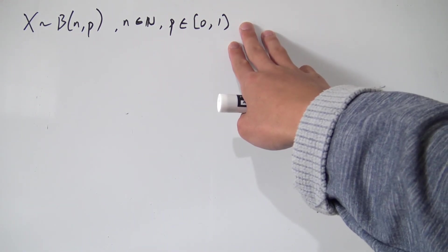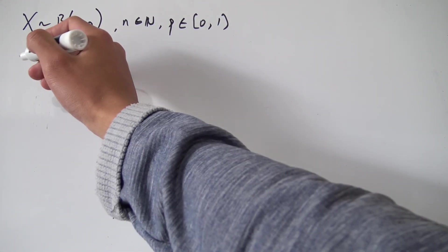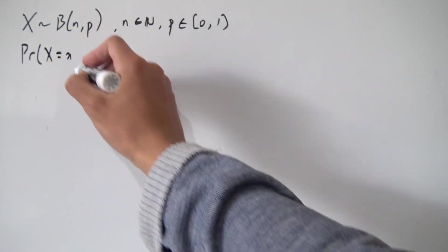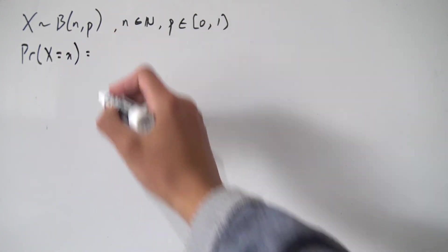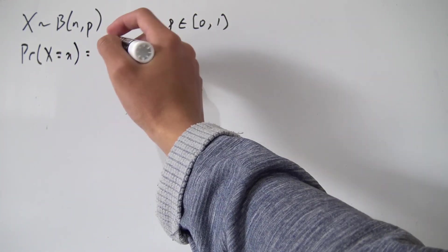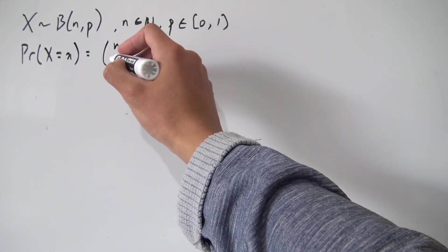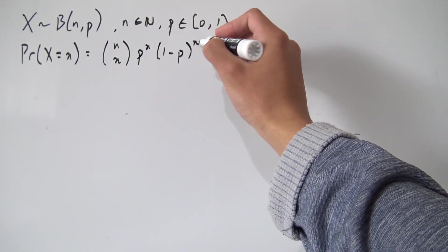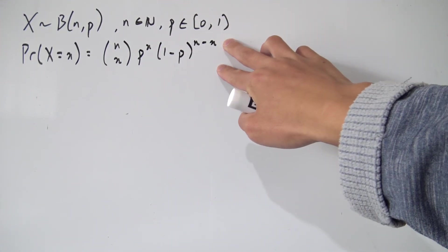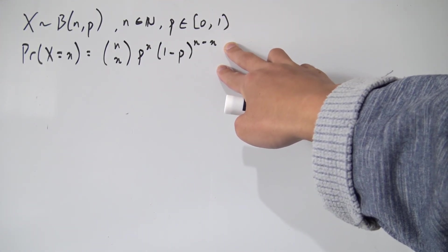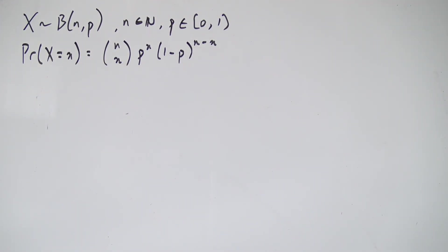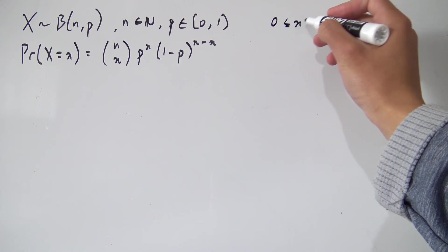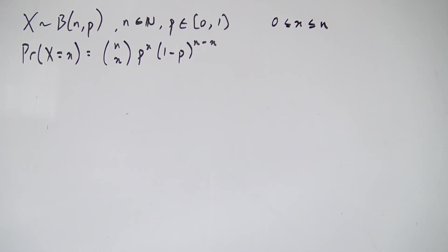So let's go on to finding the probability that our random variable equals some value X. Using the definition of binomial probability, it's going to be N choose X times P to the X times 1 minus P to the N minus X. Our X is always between 0 and N — it can't go outside of that domain.